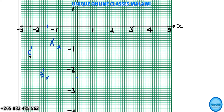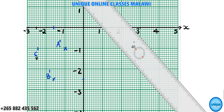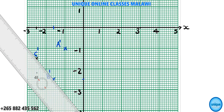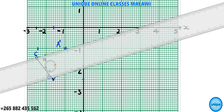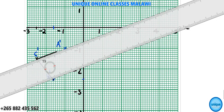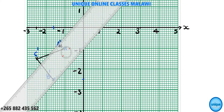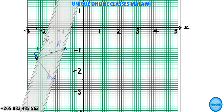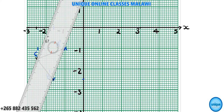Now we join the image points using another color — black. We draw line B'C', then line C'A', and finally line A'B', forming the image triangle A'B'C' on the graph.